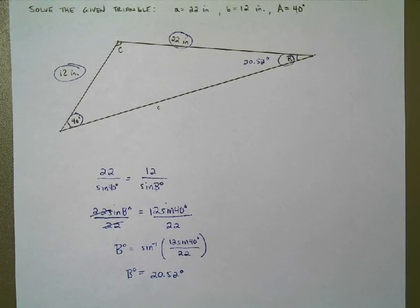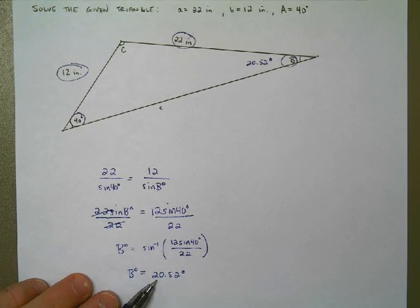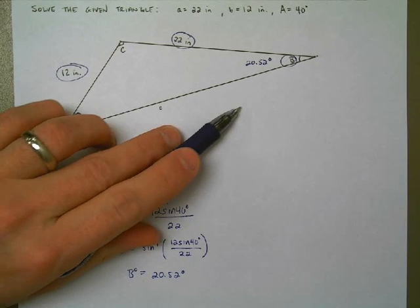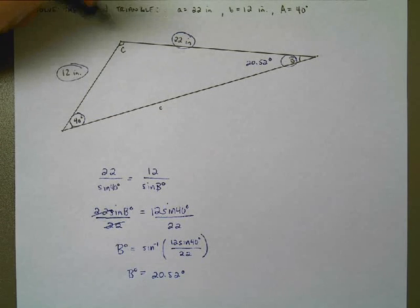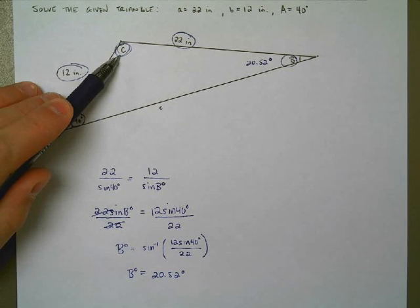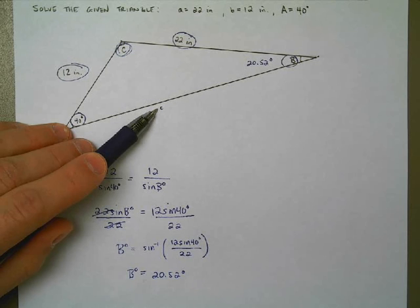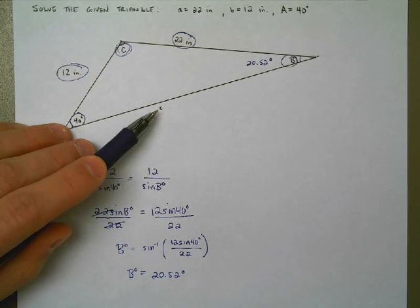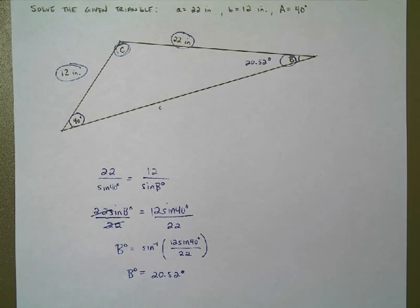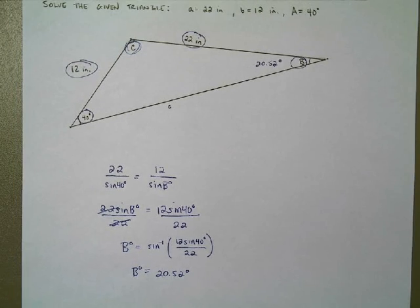Once I have this, it's going to be very simple to go further. Now that I know angle A is 40 degrees and angle B is 20.5 degrees, I know the three angles add up to 180, so it's straightforward to solve for angle C next. Once I solve for C, I would use the law of sines again to solve for side length c. The question is, how do I know there aren't two solutions? Let's go talk about some different cases, and then we'll come back to this problem.